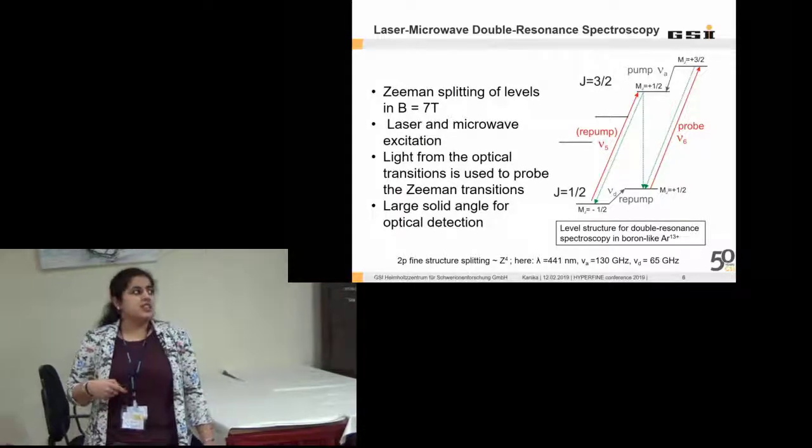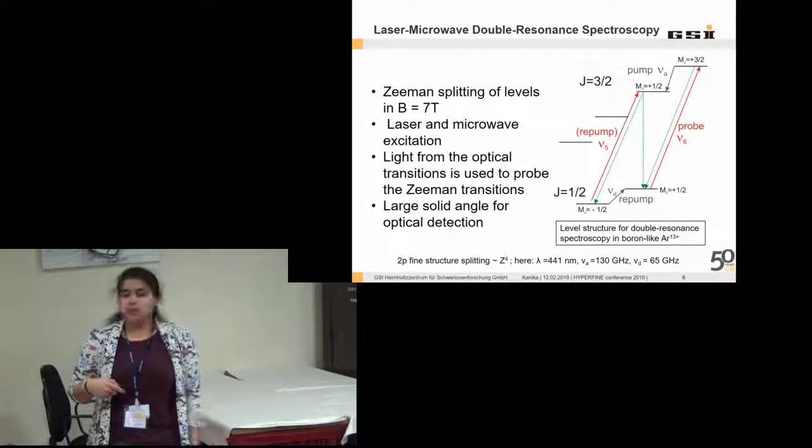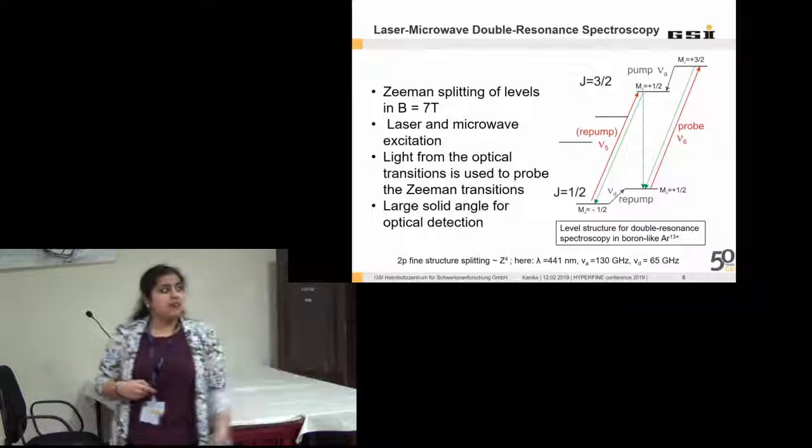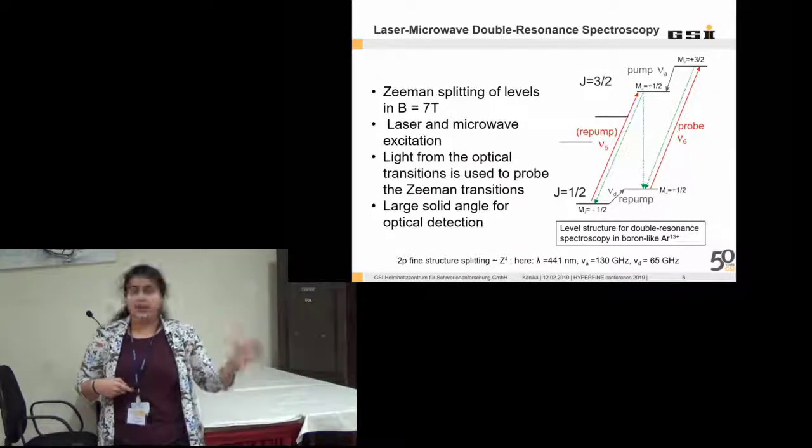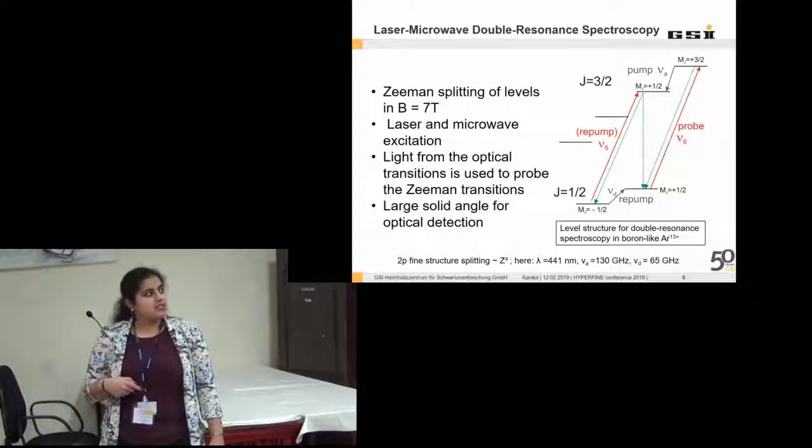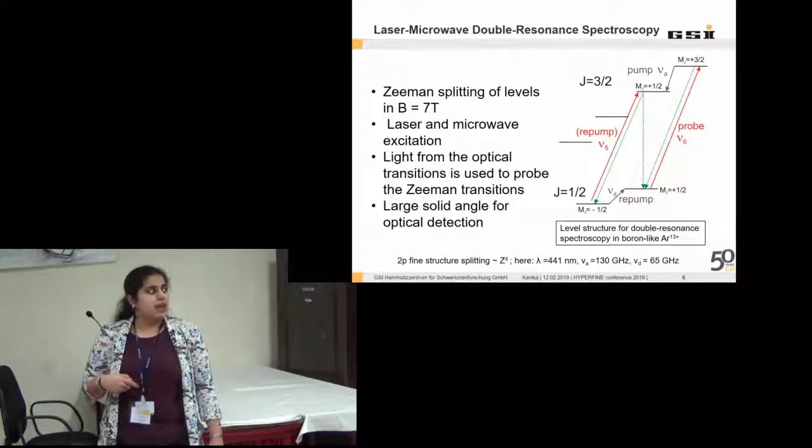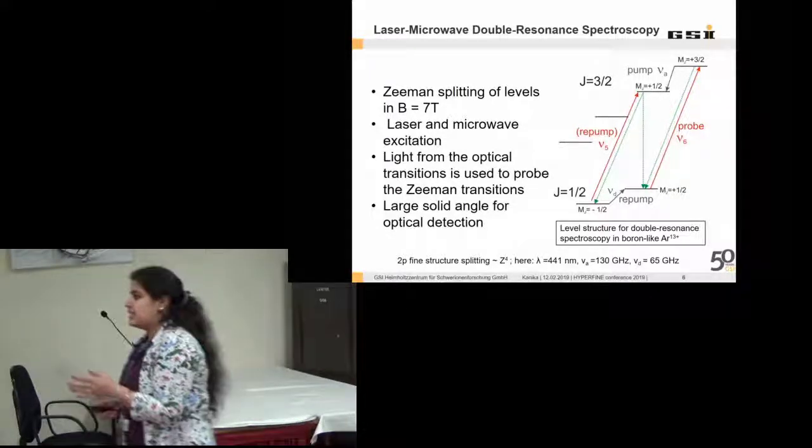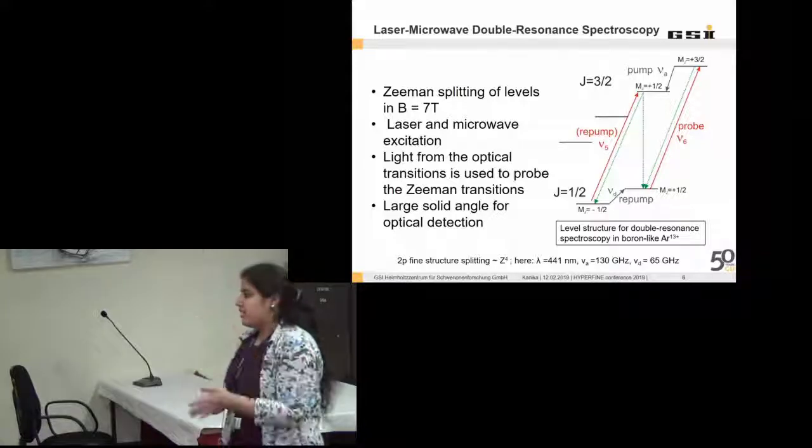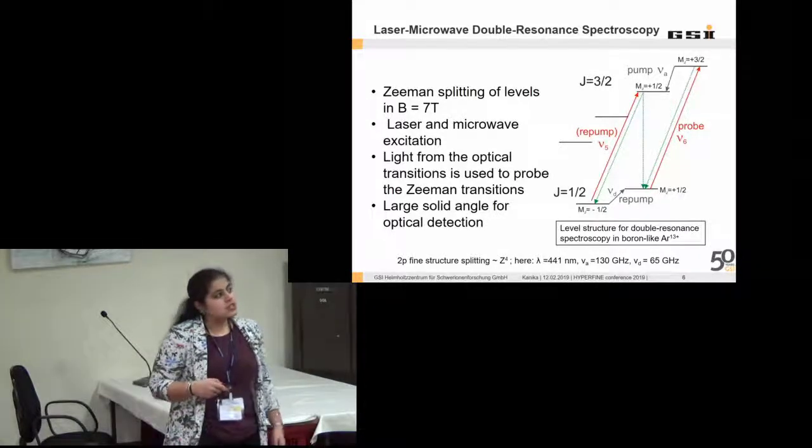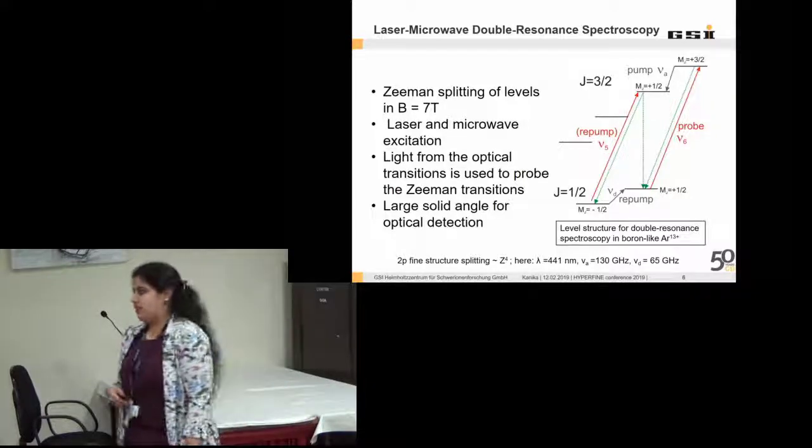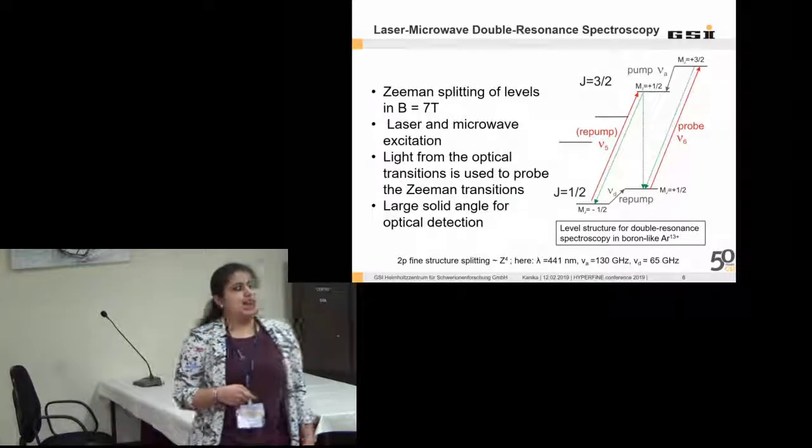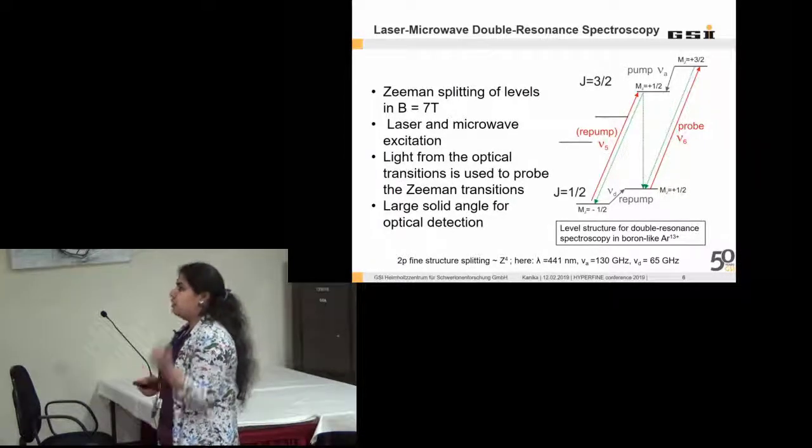When we scan the microwave of a frequency about omega A, some of the ions from 3/2 would go to 1/2 and there would be a decrease in the fluorescence. This decrease in the fluorescence will give us the frequency at which there is a decrease in the fluorescence. That is the frequency of this transition, or we say that is the Larmor frequency for this particular transition. The light from the optical transitions is used to probe the Zeeman transitions.